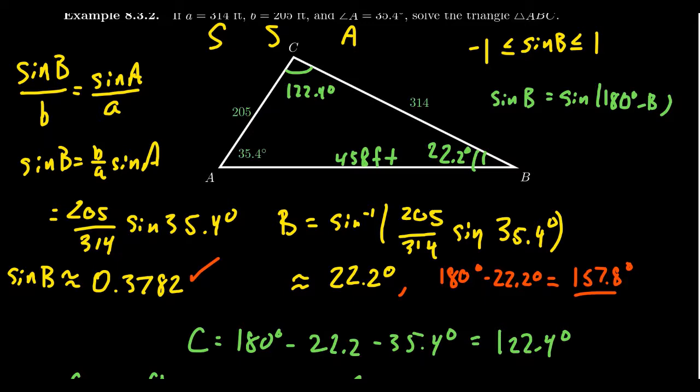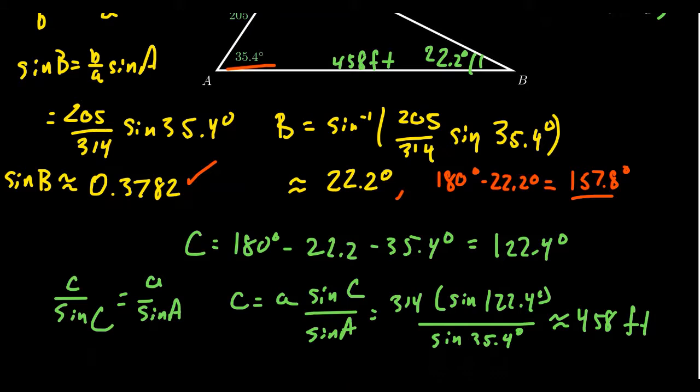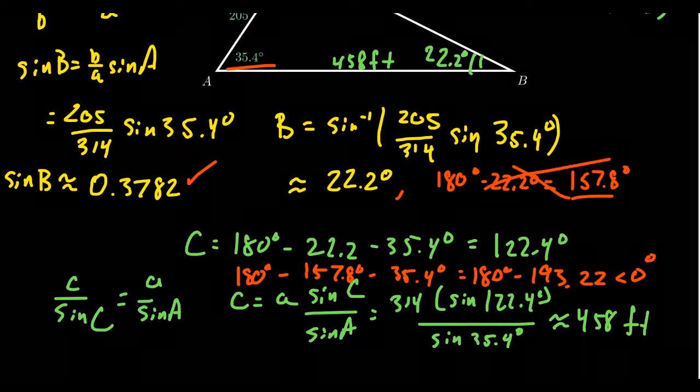I want you to compare 157.8 versus A. When you compute C, you take 180 degrees, subtract B which would be 157.8 degrees, and subtract A which is 35.4 degrees. In that situation, you would end up with a negative value. Notice that you get 180 degrees minus the combined value of B and A, which would be 193.2 degrees. That's going to give you something less than zero. C can't have a negative degree measure, so this tells you that B cannot be obtuse in this situation.